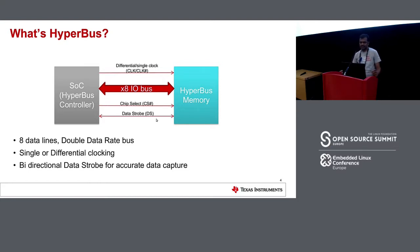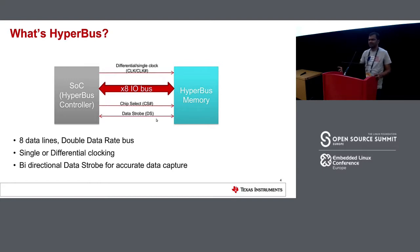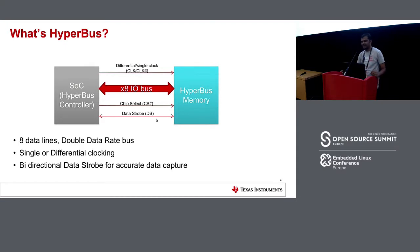It uses either a single-ended clock or differential clock depending on the voltage. If it's a 1.8-volt part, it'll use a differential clock; otherwise it can use a single-ended clock. There is a chip select similar to a SPI bus to select the memory device, and a data strobe. Since this is a high-speed interface, the data strobe helps in having an accurate data capture window for the host.